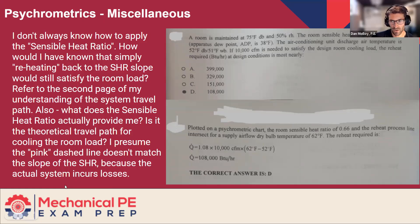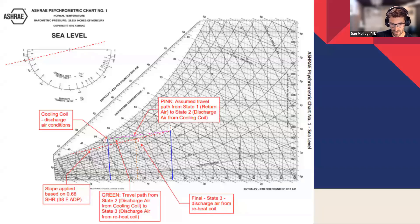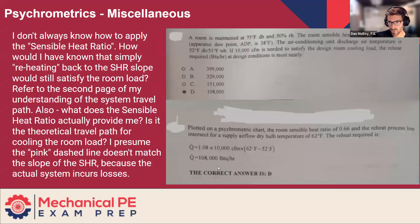Really good question about a common problem that comes up. I'm actually going to read this problem out and then I'm going to jump over to the really nice drawing that you did on the psychrometric chart. We'll spend a couple of minutes on this. So the question is, a room is maintained at 75 degrees and 50% RH. The room sensible heat ratio is 0.66. The apparatus dew point is 38 degrees. The air conditioning unit discharge air temperature is 52 degrees dry bulb, 51 degrees wet bulb. If 10,000 CFM is needed to satisfy the design room cooling load, the reheat required in BTUs per hour at design conditions is most nearly what?